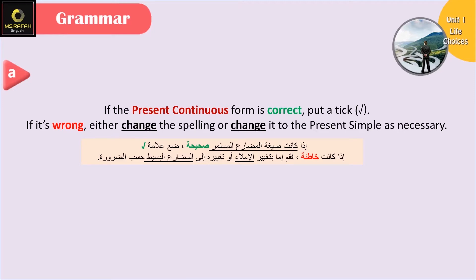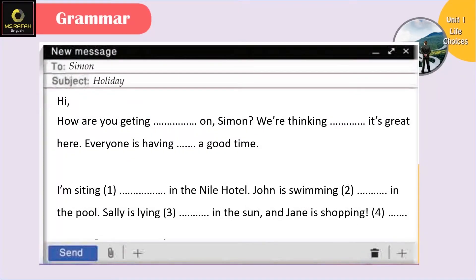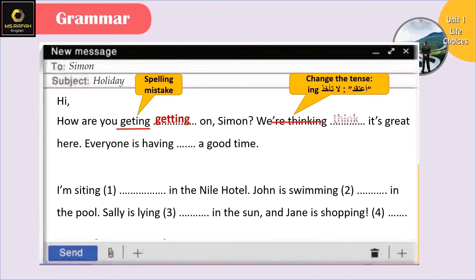التركيز بهذا السؤال هو على زمن الحاضر المستمر. إذا كان الفعل صح رح نحط tick، أما إذا كان الفعل غلط فإما رح نتأكد من الكتابة الإملائية أو رح نحول الزمن للحاضر البسيط. Hi, how are you getting on Simon? الفعل 'getting' في عنا خطأ إملائي - there is a double t. We're thinking - هون الاستخدام غلط، معناها أنا أعتقد وليس نحن نفكر.